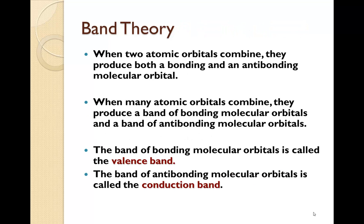When two atomic orbitals combine, they produce both a bonding and an anti-bonding molecular orbital. We talked about this in previous chapters. So this is the situation where we have a 1s here and we have a 1s here, and we have a sigma and we have a sigma star. Hopefully you remember this.